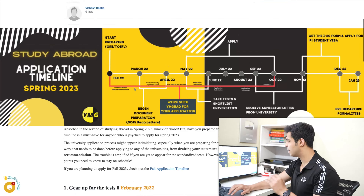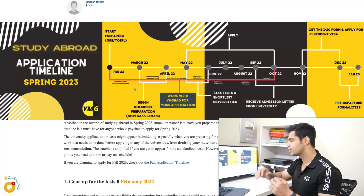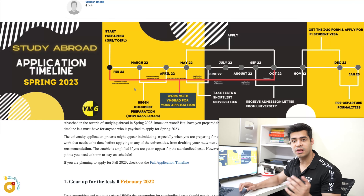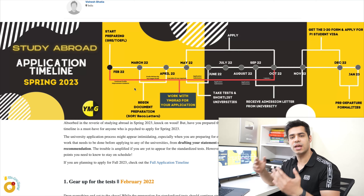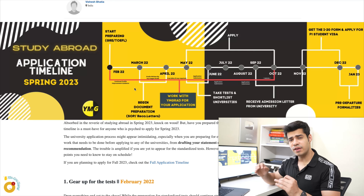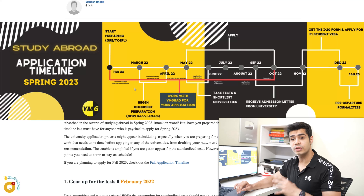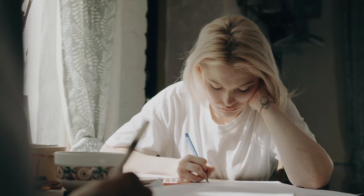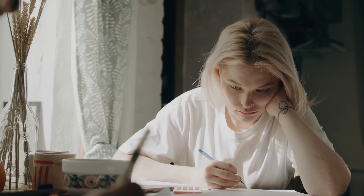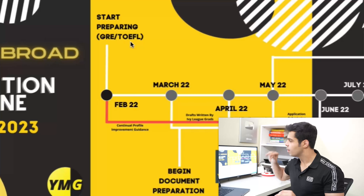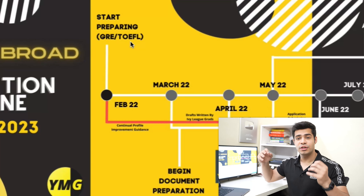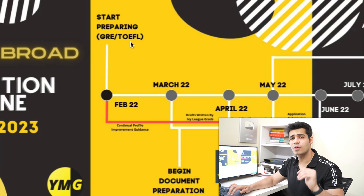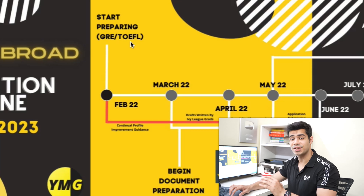Moving on to the actual schedule — what do you have to do and when do you start? The schedule essentially starts around February 2022. I know it's passed and we're making this in March, but you can start right now — you're not too late. The very first thing you should be doing is preparing for your standardized tests: GRE, TOEFL, GMAT, IELTS, SAT, ACT — whatever you are taking depending on your situation.